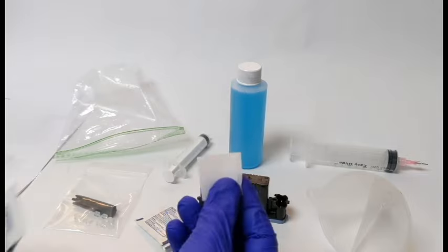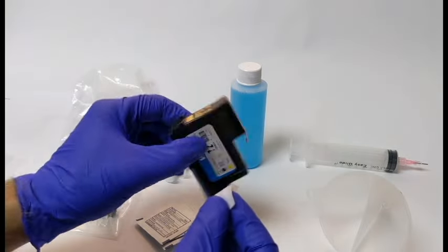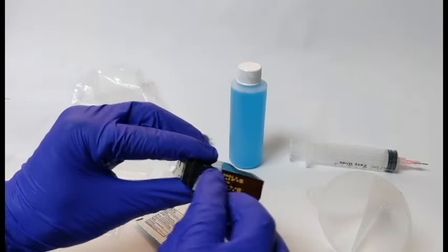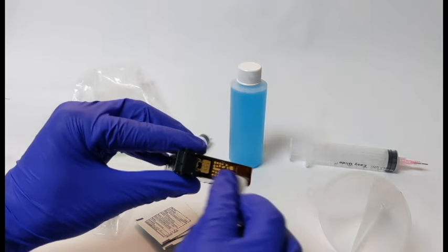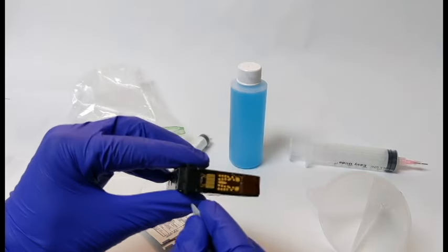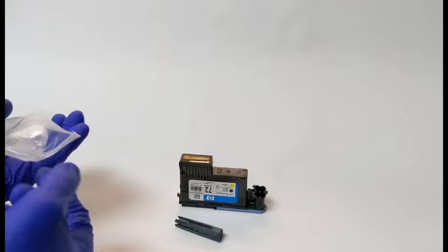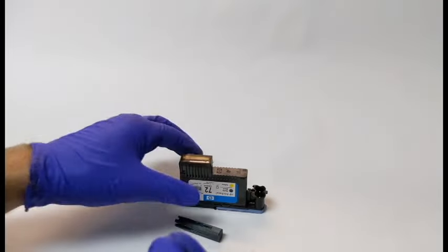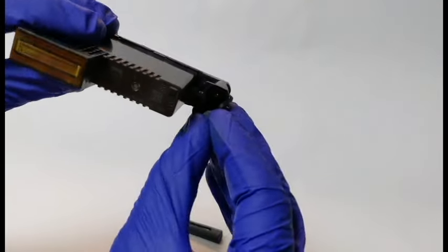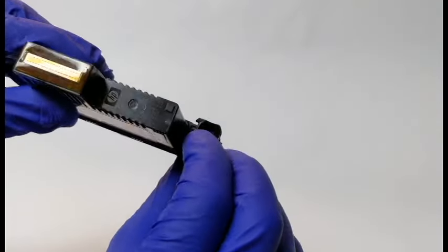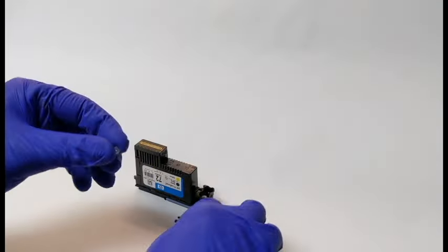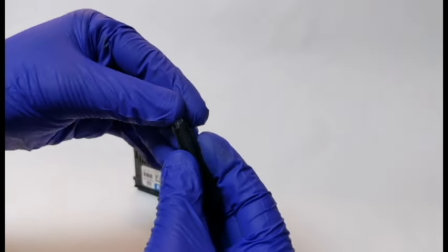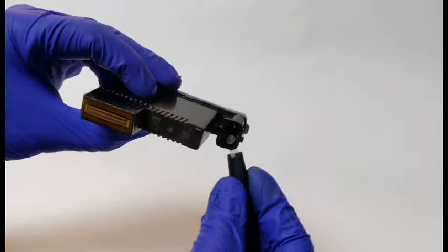Clean the contacts on the back of the print head with the alcohol wipes in the kit. There is a set of silicon print head seals in the smaller ziplock bag. Push a seal onto each of the print head needles and using the insertion tool, push the seals all the way in, as far as they will go.